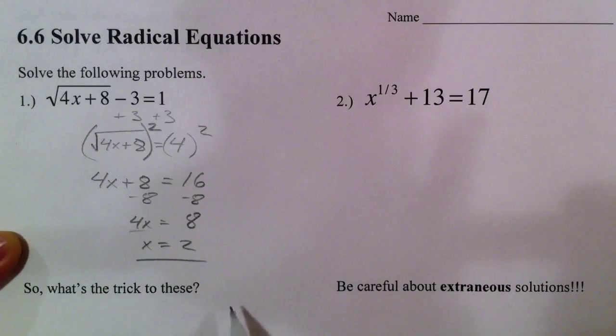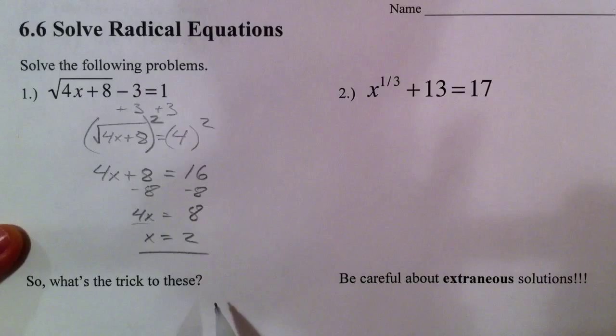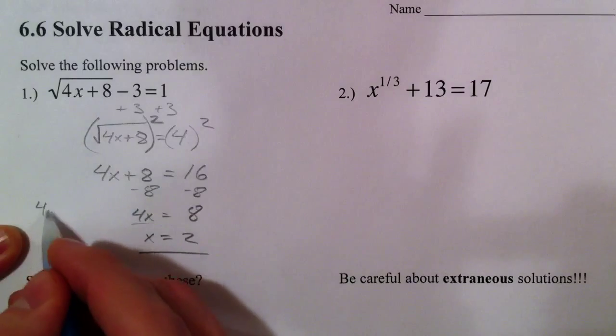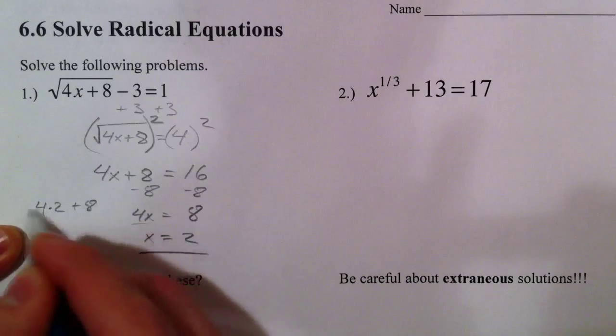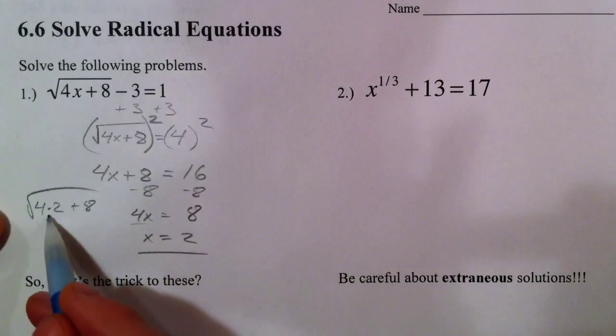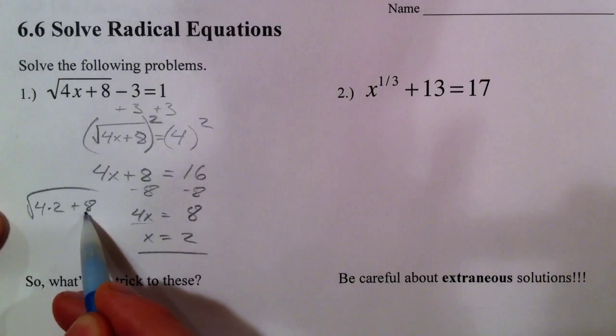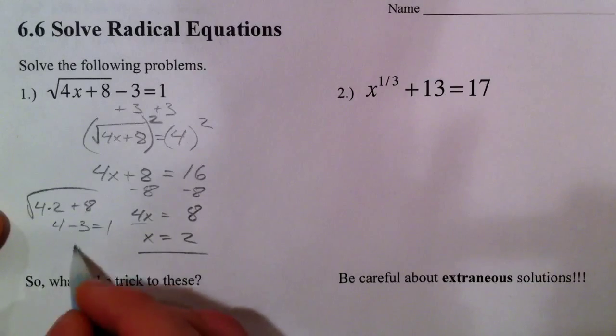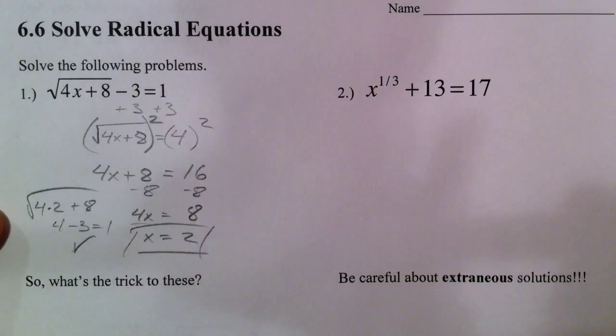So you always want to double check these answers, and I'll explain why here in a little bit. But plug in 2, 4 times 2 is 8, plus 8 square root. 8 plus 8 is 16, the square root of 16 is 4, and 4 minus 3 is 1. So it checks out. So x equals 2 is our answer.